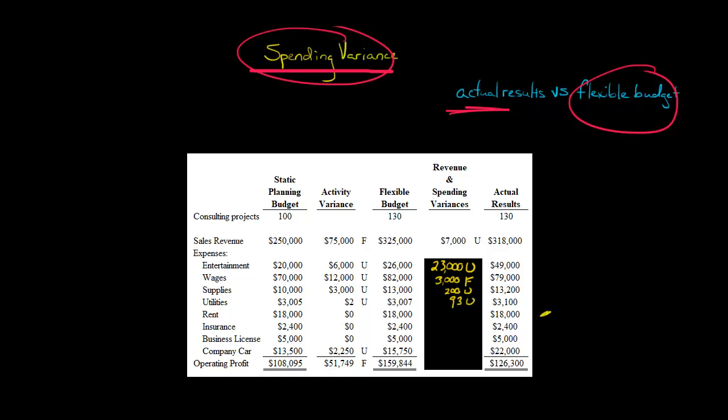For rent, the actual was $18,000 and the flexible budget was also $18,000, so there is no spending variance — it's zero. The same applies to insurance: actual equals the flexible budget amount. And the same holds for the business license as well.